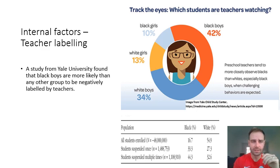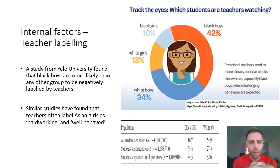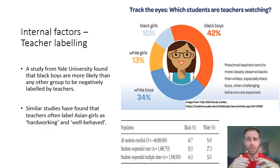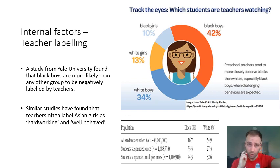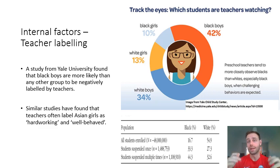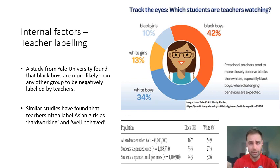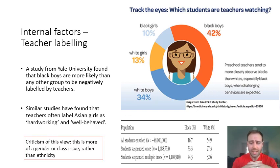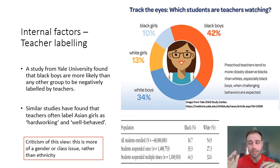What we can conclude is that teachers do seem to negatively label some ethnic groups, such as black boys. Conversely, other studies have found that teachers can also label groups such as Asian girls as hard-working or well-behaved. Applying this to the achievement graph, where Indian and Chinese pupils top the table and black Caribbean pupils are near the bottom, there may be a correlation between how teachers view particular children — 'black children are troublemakers, Asian children are hard-working' — and their academic outcomes.